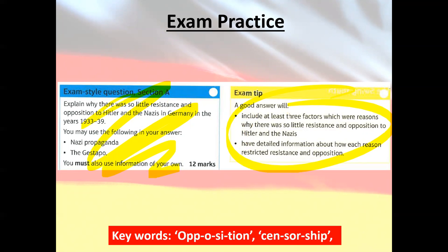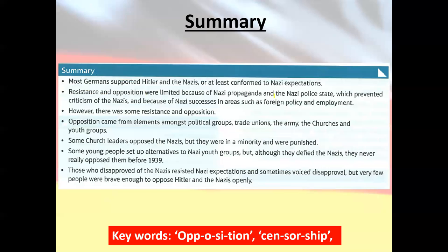In summary: most Germans supported the Nazis or at least conformed — key word, look it up if you're unsure. Resistance and opposition was limited because of propaganda and the police state. Some resistance did exist, mainly from political groups, trade unions, the army, churches, and youth groups. Those who disapproved often voiced it quietly, but very few people were brave enough to actively resist because of the Gestapo and the wider system of control.